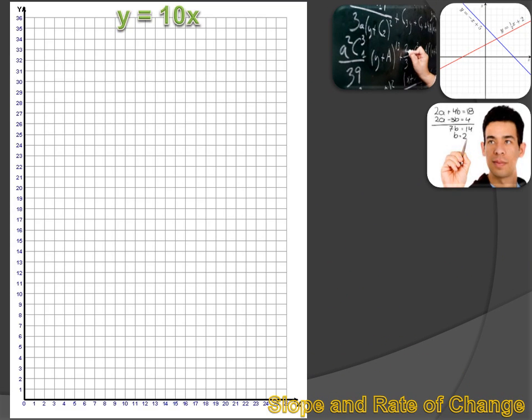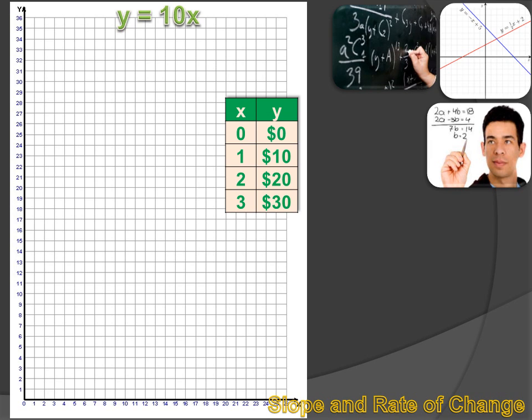We could graph this equation, Y equals 10X. We could create a table, input some X values, figure out what the Y values were, plot those points, and then draw a line. And we'd have a line that represented Y equals 10X. Now let's think about this line. Y is an amount of money. Y is how much money you've made babysitting. And X is the amount of time you spent babysitting to earn that amount of money.